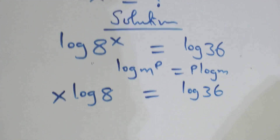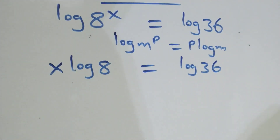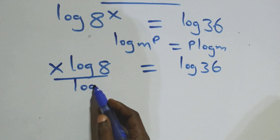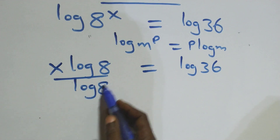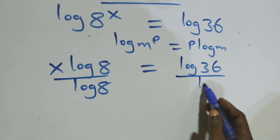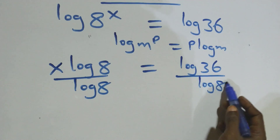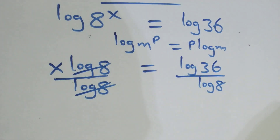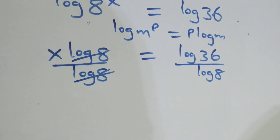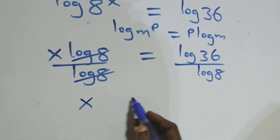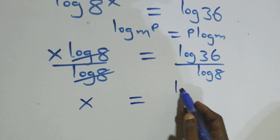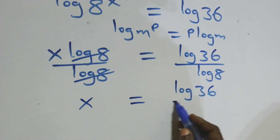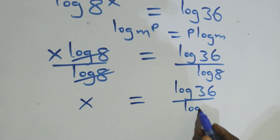The next step here, we divide both sides by log 8 — divide this side by log 8, also divide this side by log 8. This implies log 8 cancels on the left and we have x left, which is equal to log 36 over log 8.